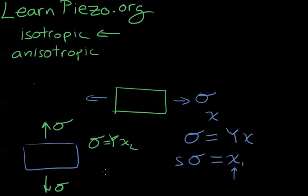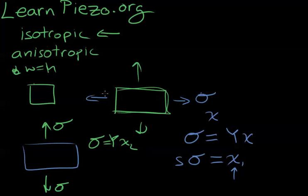For an isotropic material no matter which way you pull it, let's assume it's a block. The length, let's say the width is equal to the height of the block. If you're pulling in these two different ways with the same force or the same stress, you'd get the same exact strain.